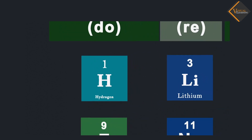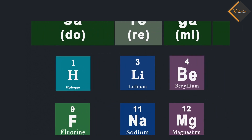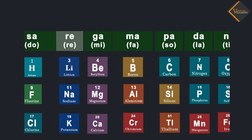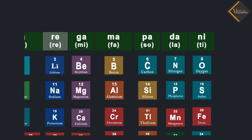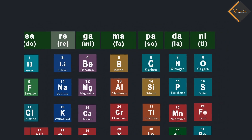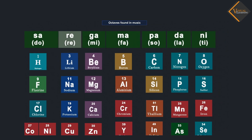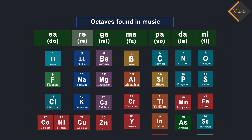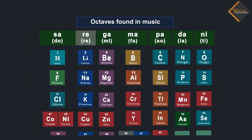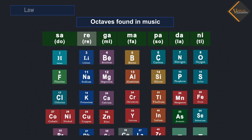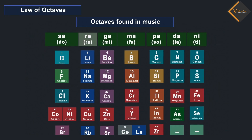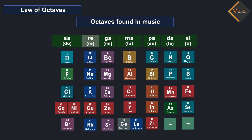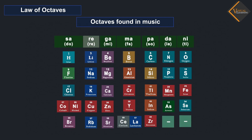He found that every eighth element had properties similar to that of the first. He compared this to the octaves found in music. Therefore, he called it the Law of Octaves. It is known as Newland's Law of Octaves.